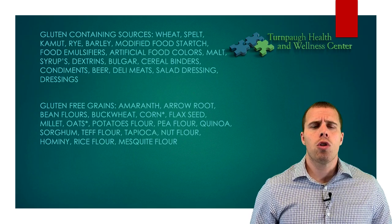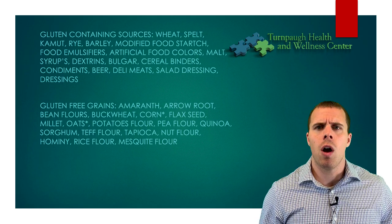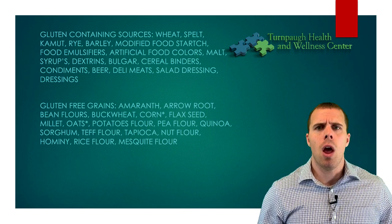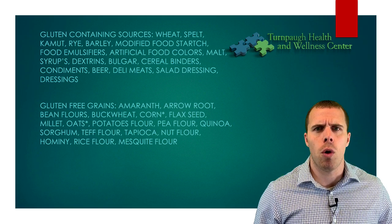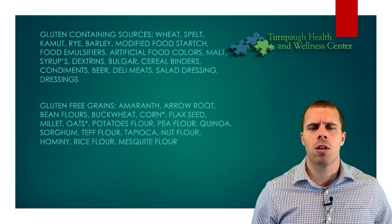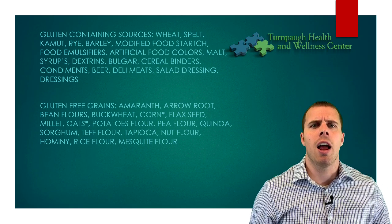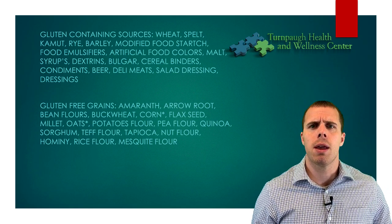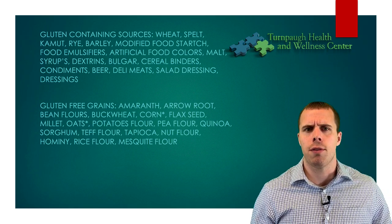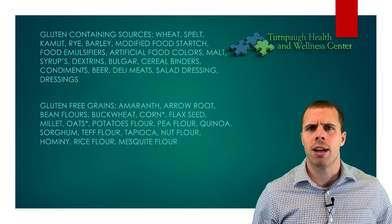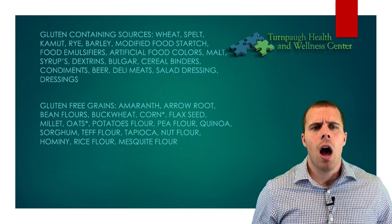Some sneaky sources of gluten to avoid: obviously wheat, spelt, rye, barley, modified food starch, food emulsifiers, artificial food colorings, malts, syrups, dextrins, bulgur, cereal binders, and condiments — make sure they're labeled gluten-free. Also watch out for beer, deli meats, salad dressings, and soy sauce. For deli meats, try to ensure they're nitrate-free and labeled gluten-free.